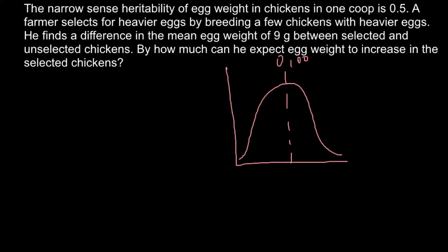For example, on the lighter shoulder we may have eggs weighing 90 grams or 80 grams. On the heavier shoulder we may have eggs weighing 110 grams or 120 grams. For selection, we would prefer this heavier shoulder and select those individuals that produce heavier eggs. So we take eggs between 100 and 120 grams, and the new mean of our selection would be about 10 grams more than the original mean.